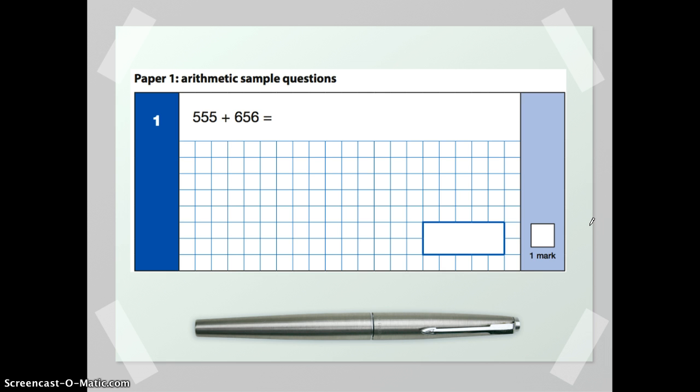So the question we've got here is adding together two three-digit numbers. Now because it's only worth one mark, you can use any arithmetic method that you would like to.